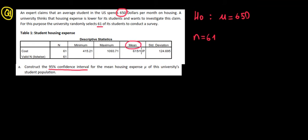We have an average, a mean of 615. So we usually know the mean of the sample. This is the mean of the sample, 615.107. And then we have a standard deviation also for the sample which we will note as S. S equals to 125.695.